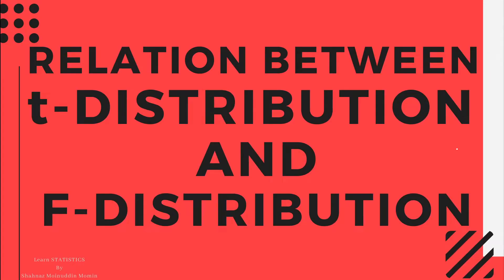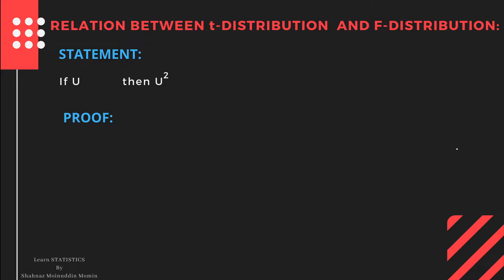In the F-distribution, we will discuss the relation between T-distribution and F-distribution. We shall start with the statement of relation. If U is a random variate which follows T-distribution with n degrees of freedom, then U² follows F-distribution with degrees of freedom 1 and n. So, if U is a T-variate, then its square is F-distribution with parameters 1 and n.